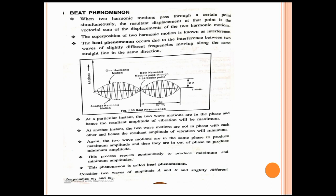So, at any particular point, the resultant displacement is the vectorial sum of these two harmonic motions — this is the superposition of the harmonic motions. The two harmonic motions have slightly different frequencies ω₁ and ω₂. When they pass through a certain point simultaneously, the resultant displacement is their vectorial sum, and the superposition of the two harmonic motions is known as interference.